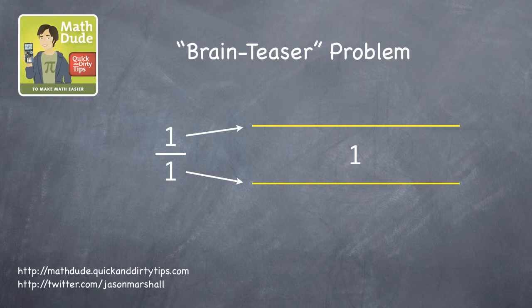In other words, if the numerator and denominator both represented the length of something, let's say a pencil, it would take one of the bottom pencils to equal the length of the top one.